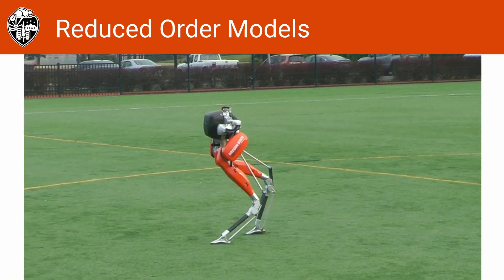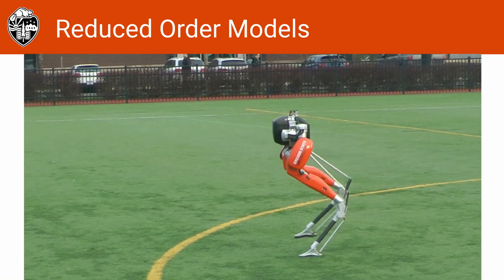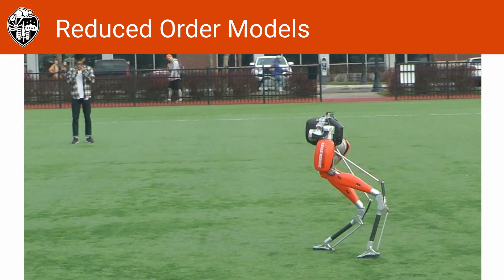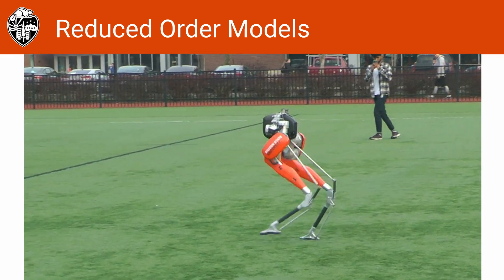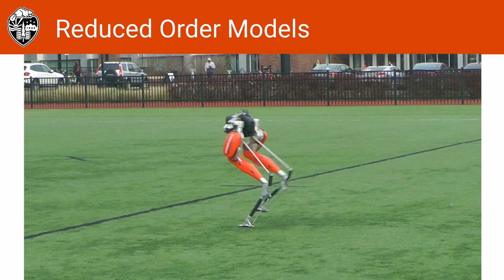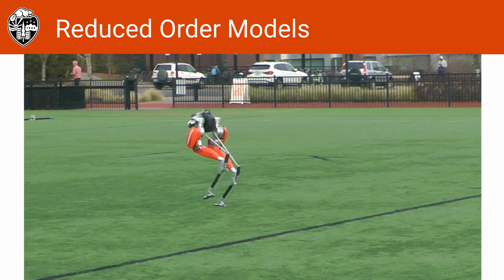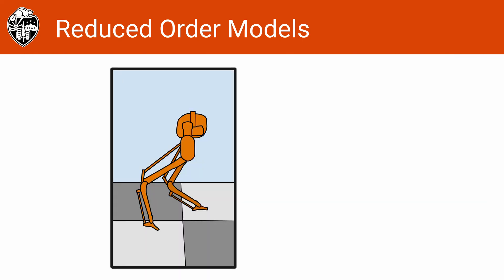I'm really interested in creating agile and robust legged locomotion, particularly for bipedal robots like Cassie shown here. These robots are high dimensional, nonlinear, go through hybrid transitions and operate in unknown environments.